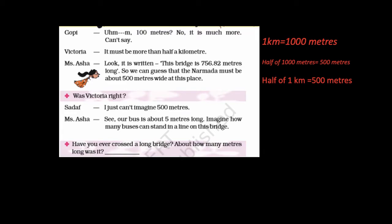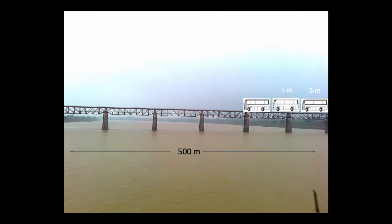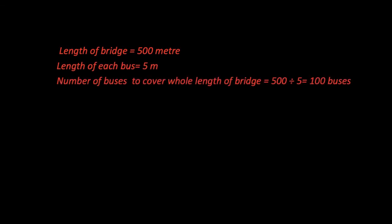Sadaf says she can't imagine how big 500 meters is. The bus they are travelling in is 5 meters long. So, how many buses can stand on this bridge? Length of bridge = 500 meters, length of each bus = 5 meters. Number of buses = 500 ÷ 5 = 100 buses. So 100 buses can be arranged on the bridge.